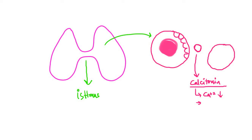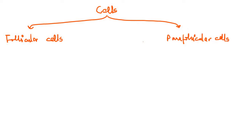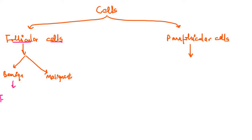The basic neoplastic lesions arise from these two cell types — follicular cells and parafollicular cells. Tumors can arise from either type. If the lesion arises from follicular cells it may be benign or malignant. If it is benign, it is called a follicular adenoma.